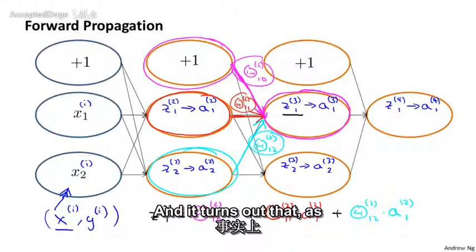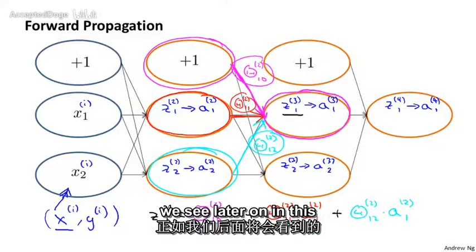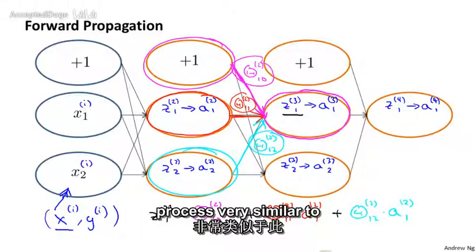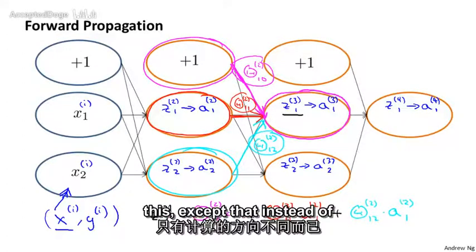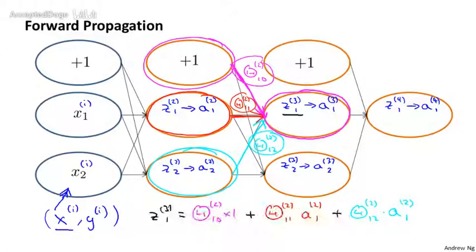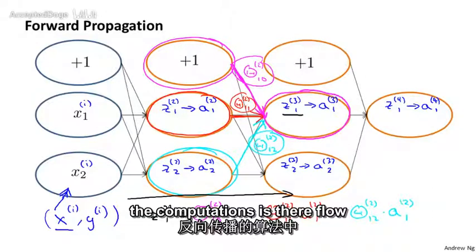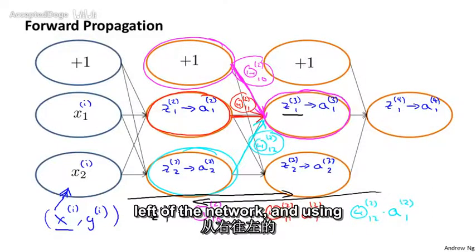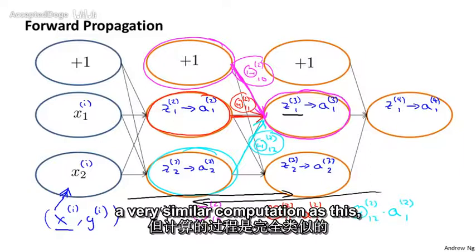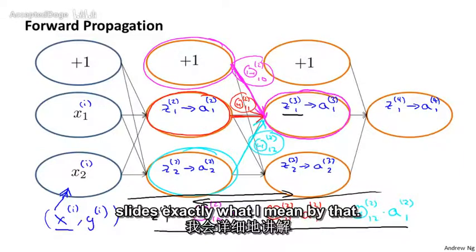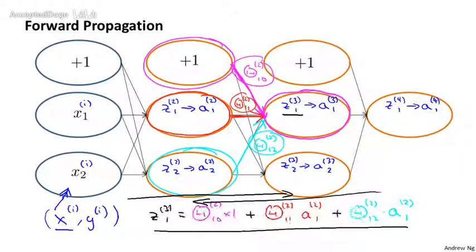It turns out that what backpropagation is doing is a process very similar to this, except that instead of the computations flowing from the left side of the network to the right, the computations instead flow from the right to the left of the network, using a very similar computation. I'll explain exactly what I mean by that in the next couple of slides.